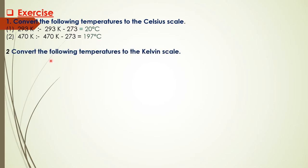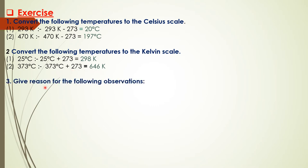Question 2: Convert the following temperatures to the Kelvin scale. First, 25 degrees Celsius—we add 273, the answer is 298 Kelvin. Second, 373 degrees Celsius—add 273, the answer is 646 Kelvin.